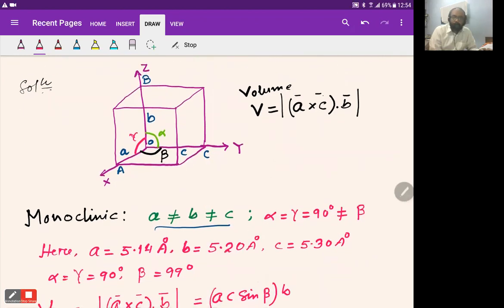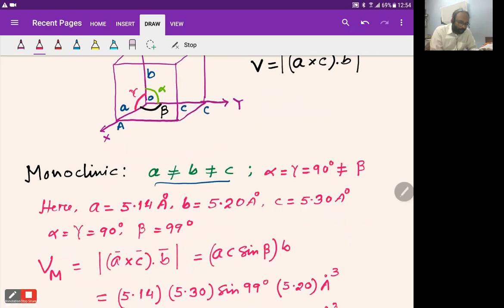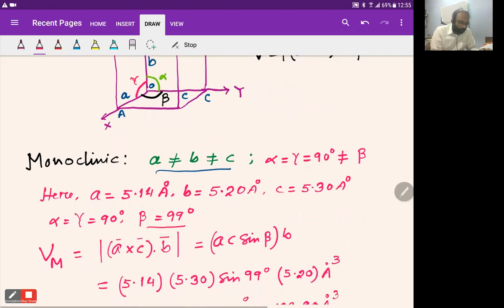For monoclinic, the lattice parameters are not the same, so a ≠ b ≠ c. α and γ are 90°, but β is not. Here, values of a, b, and c are given: α = γ = 90° and β = 99°.